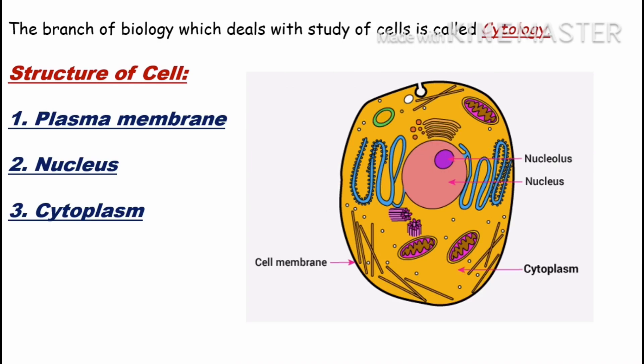First of all, we must know that cell ki study ko cytology bola jata hai. Cyto means cell and logi means study. Ab structure of cell pe aate hain. There are three main features which are present in almost all cells. First is plasma membrane, second is nucleus, third is cytoplasm.